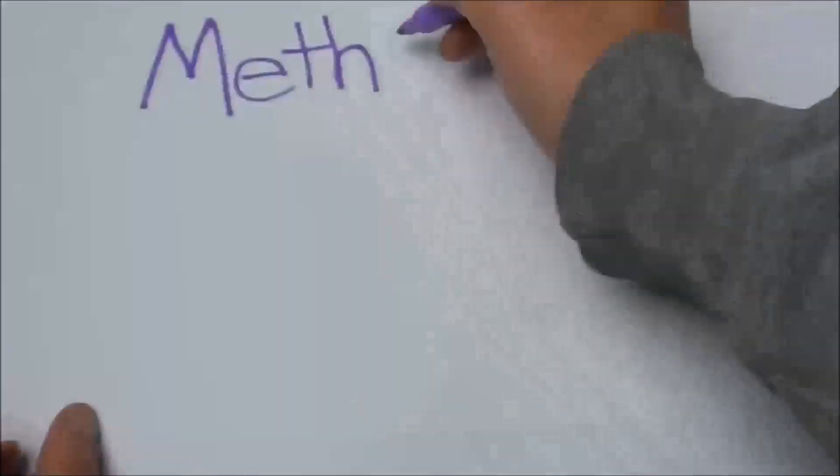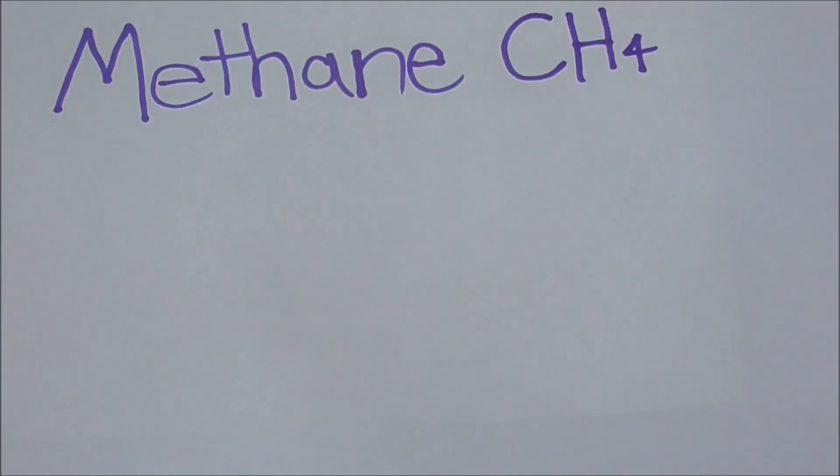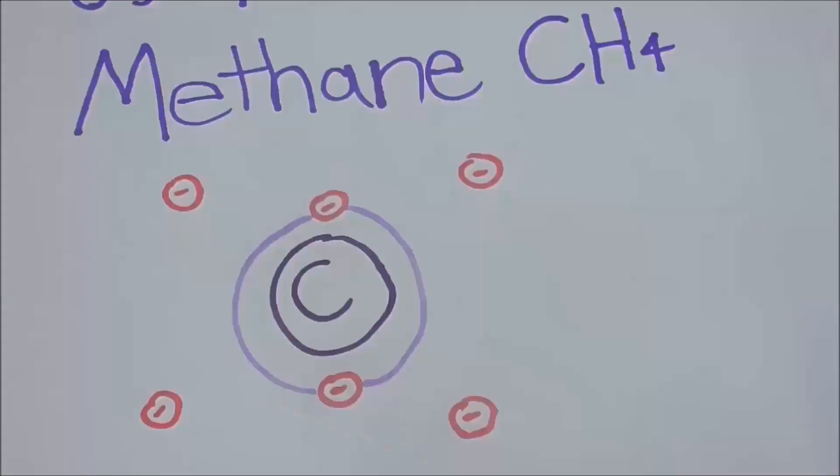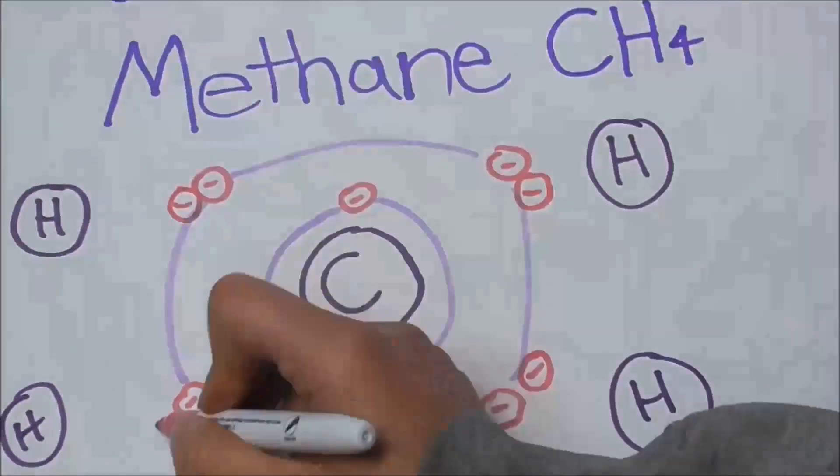So that's why when you have one carbon and four hydrogen, the carbon's satisfied with its outer shell, and so is the hydrogen. Because remember, they want two on the first one. These are the things that are going to kill us, guys.